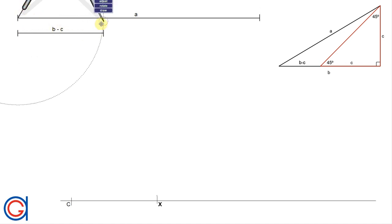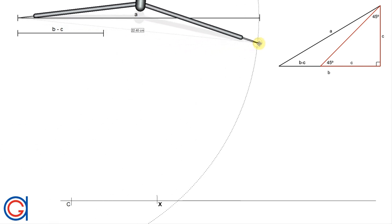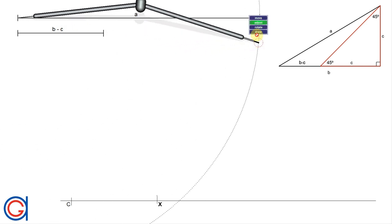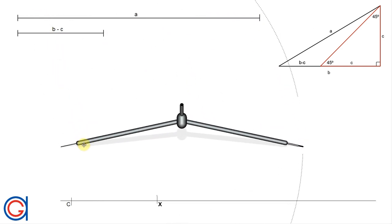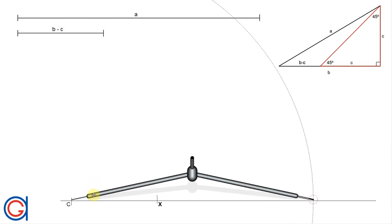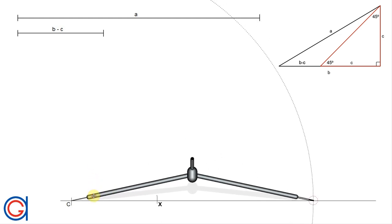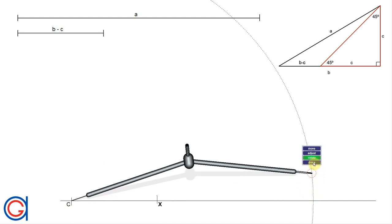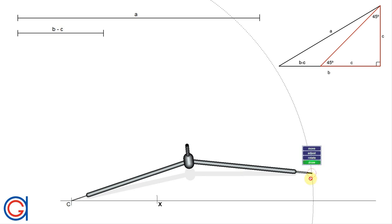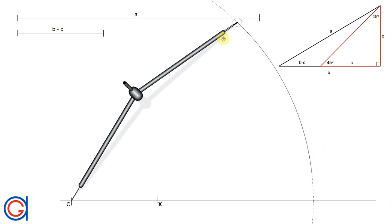And now to continue we are going to set the compass to the length of the given hypotenuse A. And now with this radius setting our compass on vertex C we are going to describe an arc to the left.